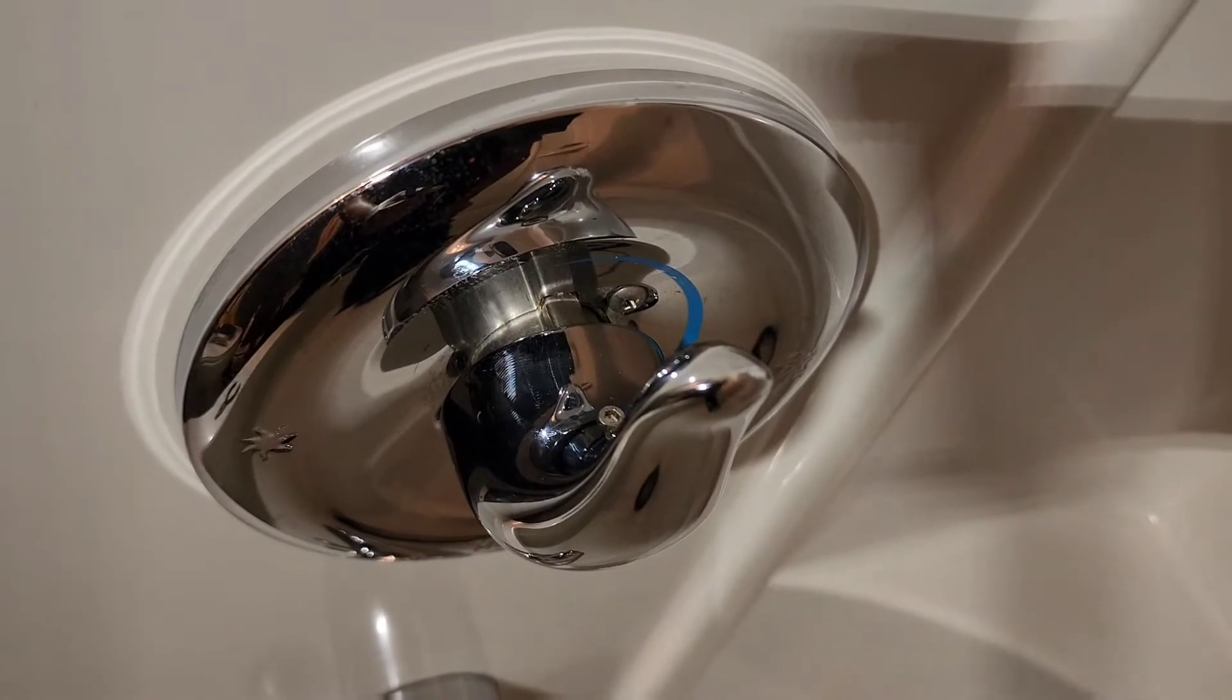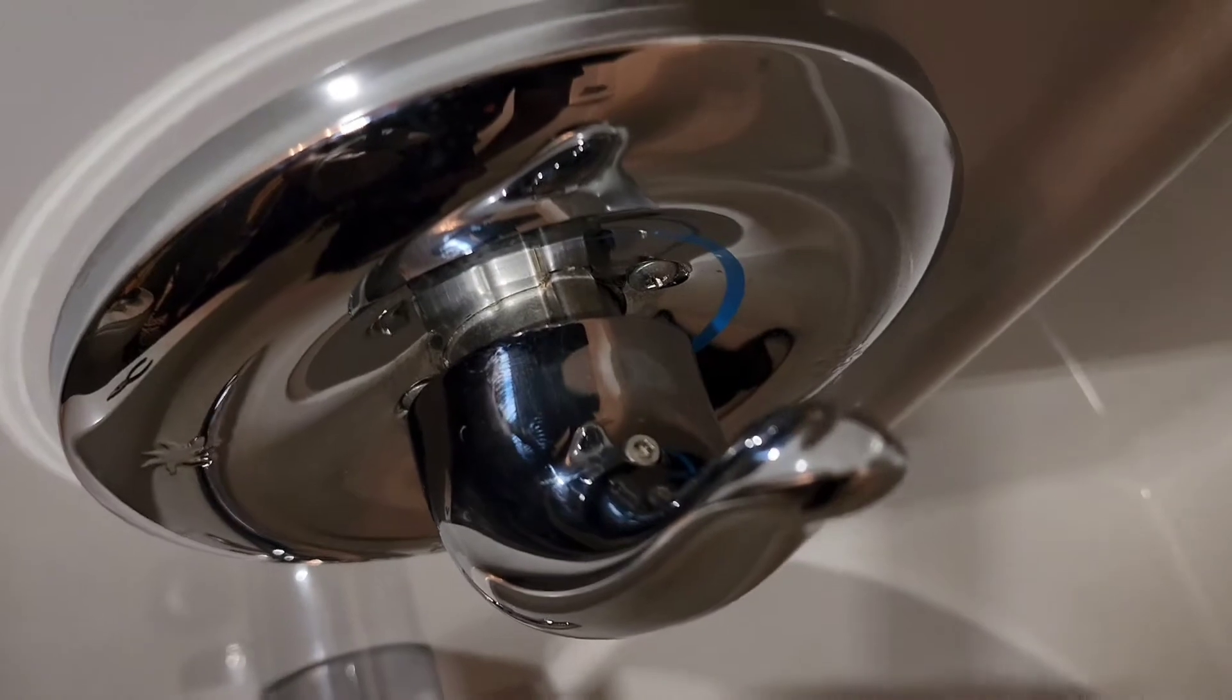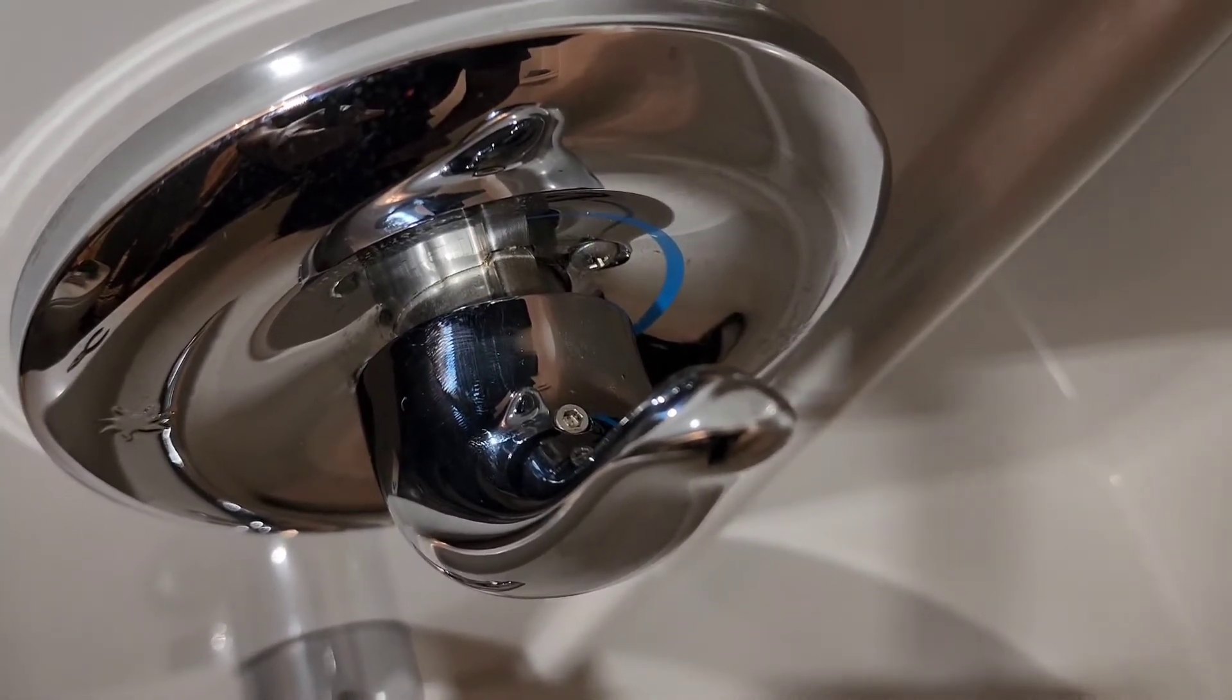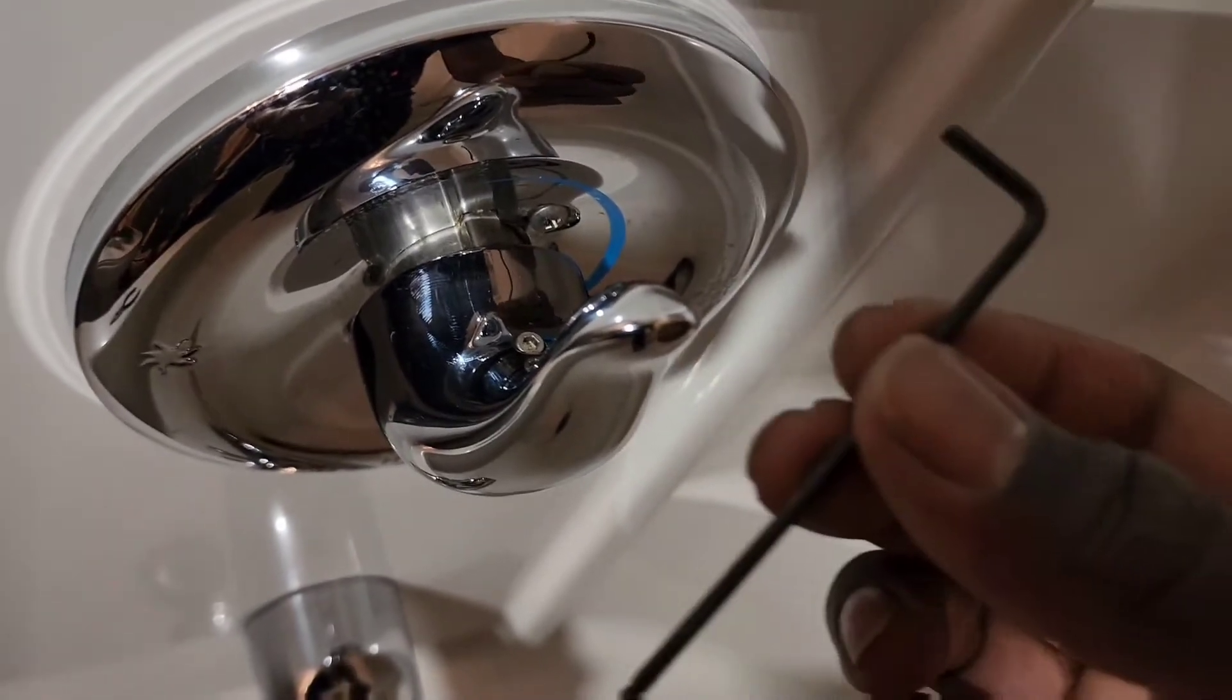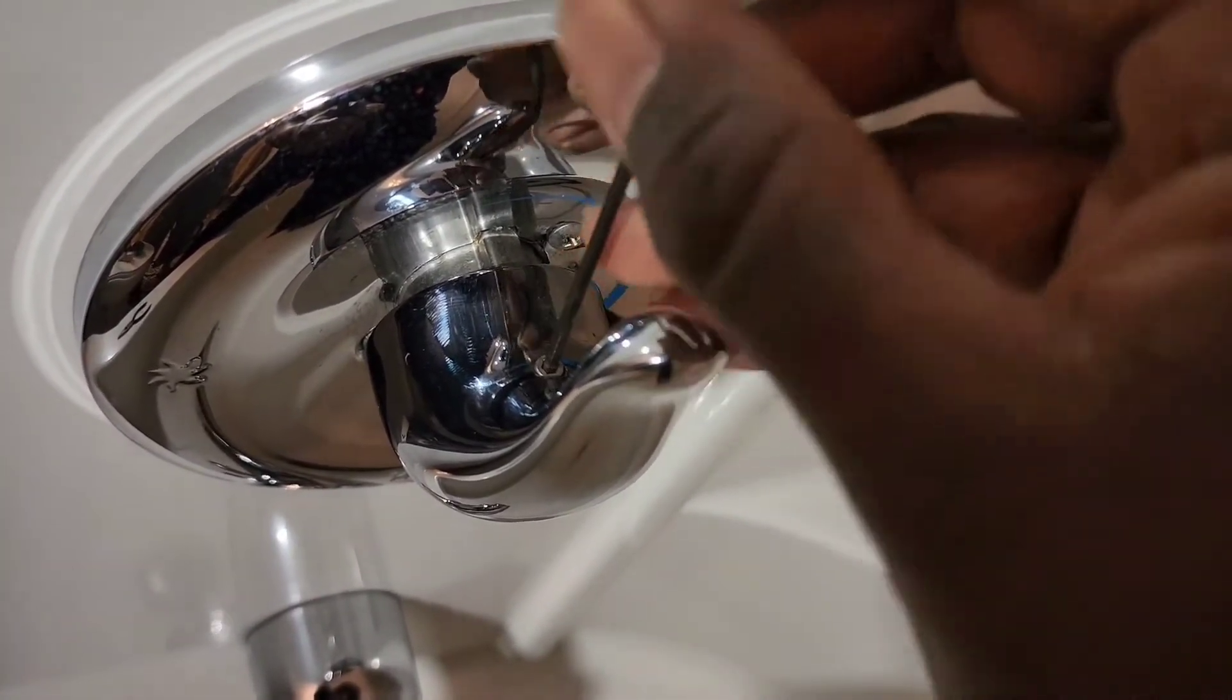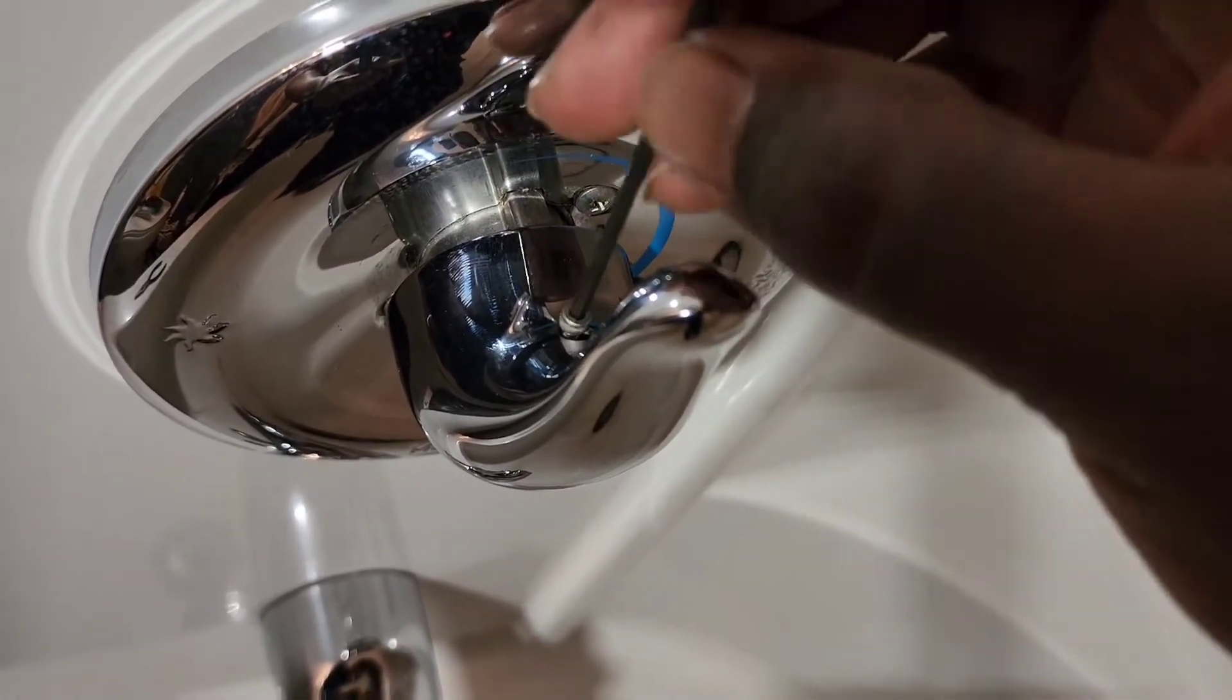What we're going to start by doing is taking off the actual handle itself. The handle has an Allen head screw. The size of the screw is a 3/32nd Allen wrench. We're going to put that in here and turn it to the left. Turn it until it comes all the way out.